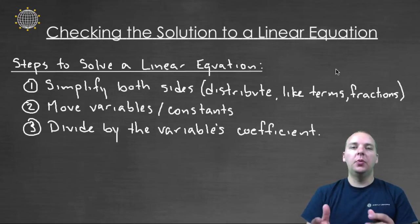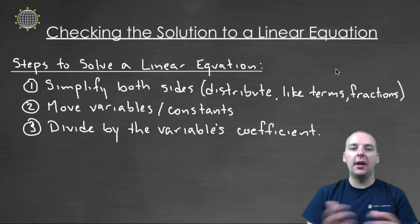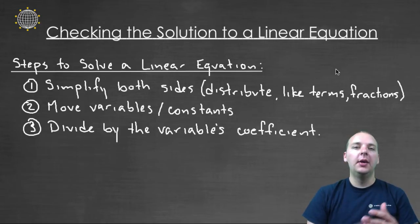Then once that's done, we'll move the variables to one side and the constants to the opposite side. Then we'll simplify again and divide by the variable's coefficient. But the problem is there's a lot of steps in there and a lot of easy places to make simple mistakes.